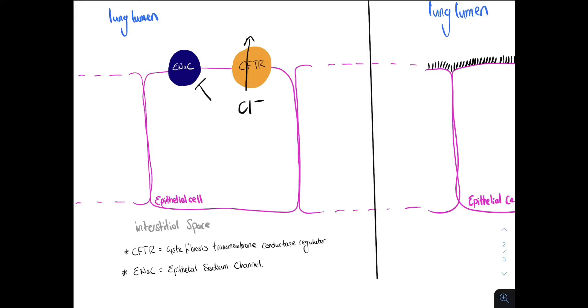This here is the ENAC channel. So if this is inhibited, sodium stays outside the cell in the lumen. Now remember, wherever sodium is, water shall follow. Because chloride and sodium are both in the lumen, water shall follow.